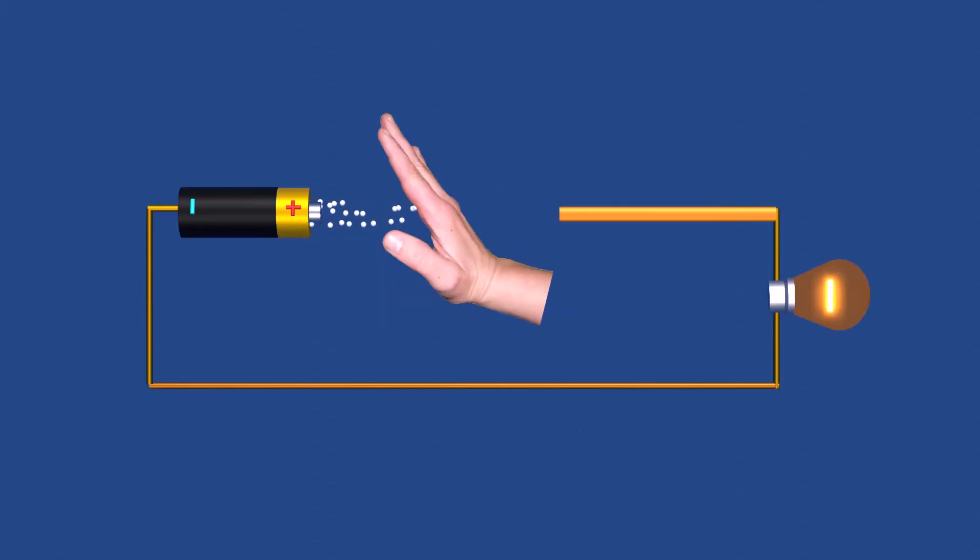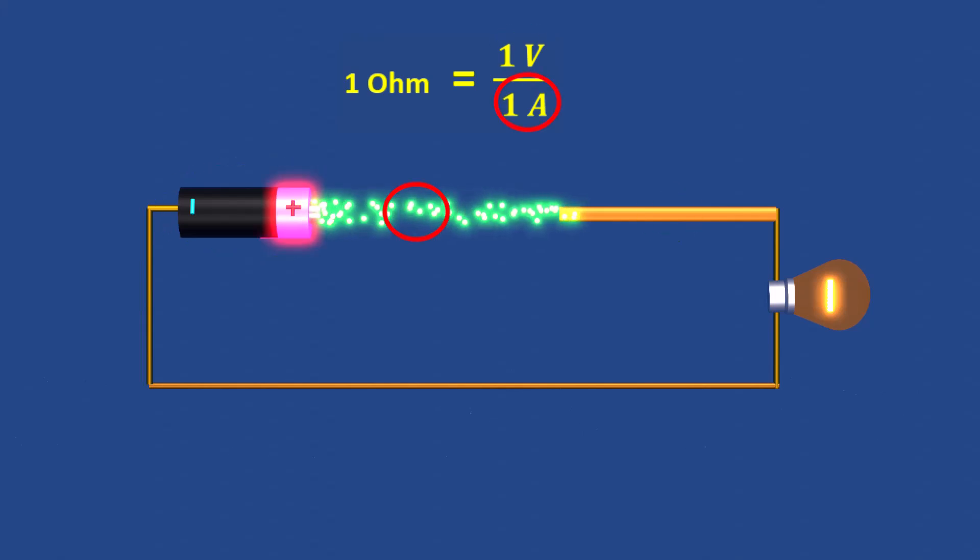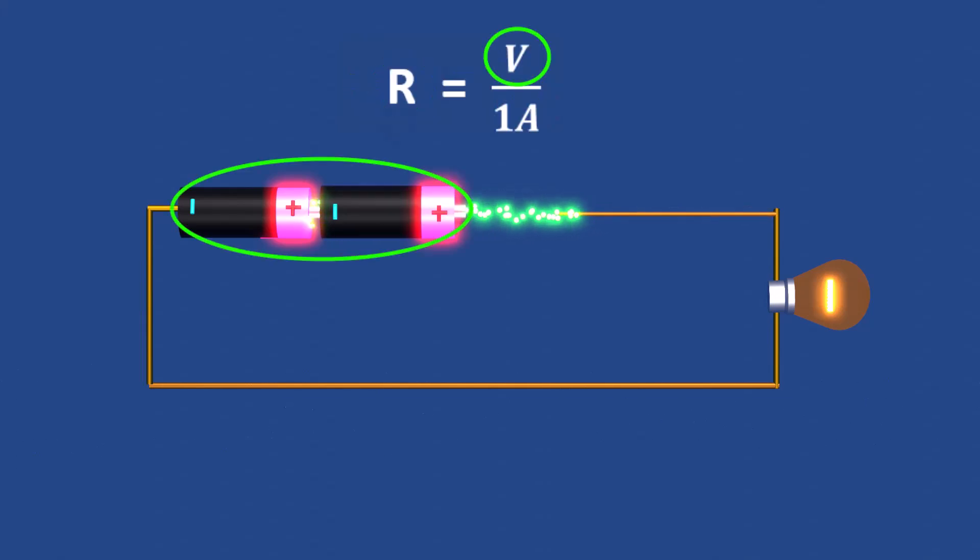Resistance is measured in ohms, where one ohm represents the resistance of a material that requires one volt to pass one ampere of current. A higher resistance means more voltage is needed to allow the same current to flow.